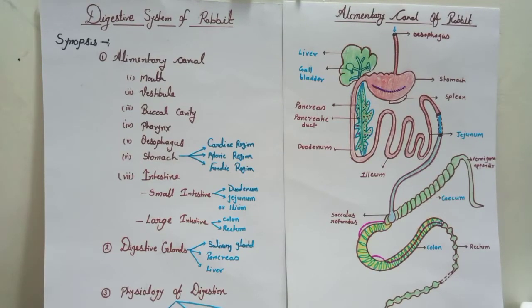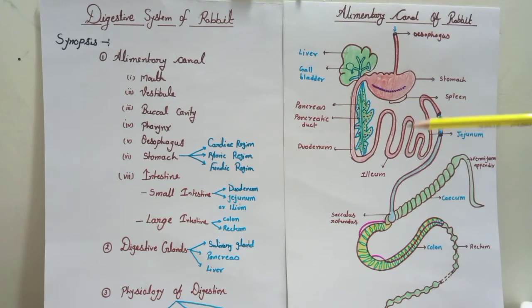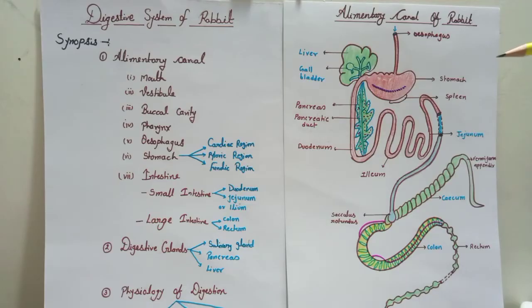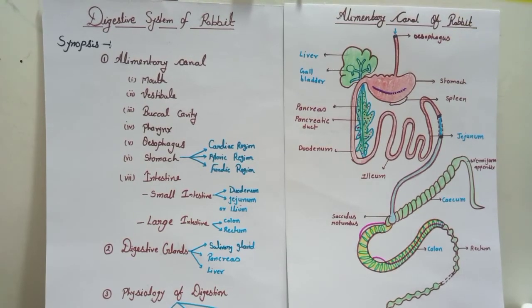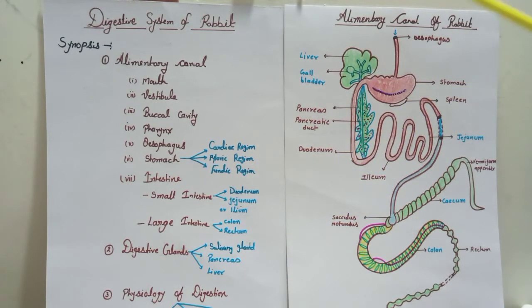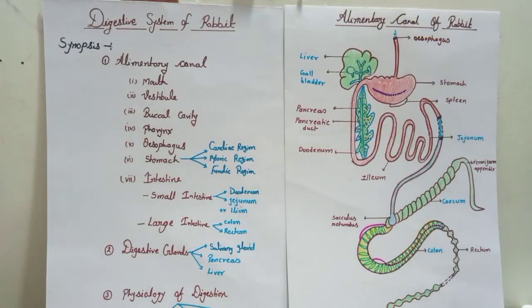Hello everyone, this is Shraddha and you are watching Knowledge Center. I am a system professor in the college. Today I will discuss with you the digestive system of rabbit — the structure of the digestive system. The rabbit belongs to the mammals. I will discuss the alimentary canal, digestive system, and the physiology of digestion.